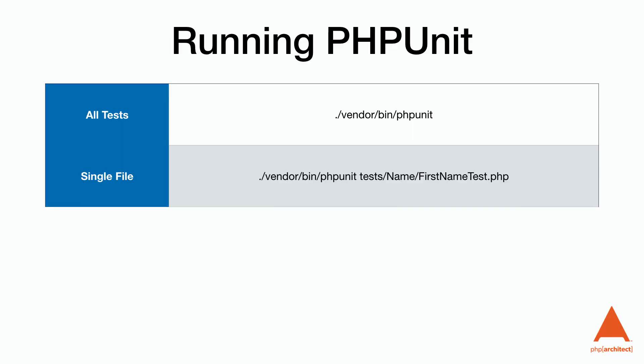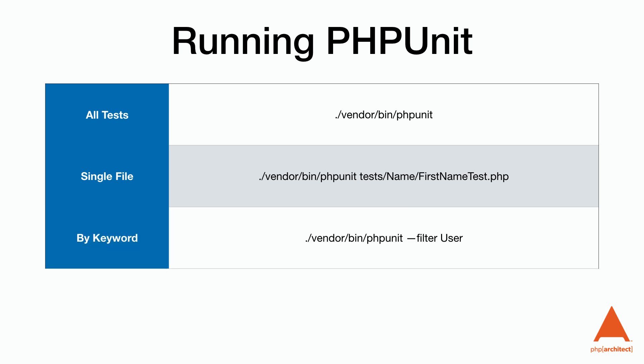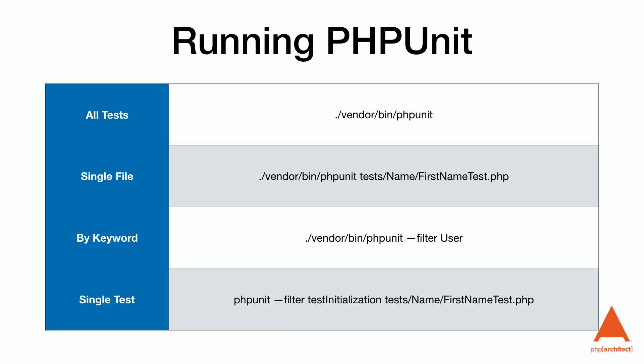To speed up our development cycle we're not going to want to run all the tests every time we make a small change. It's important to target tests for the specific change. We can pass the path of a specific test file and it will run just the tests inside that file. We can also use the filter parameter to run tests that contain specific words — for example, we might have changed our user class and want to run any tests that have 'user' in the name of the test class or test method.